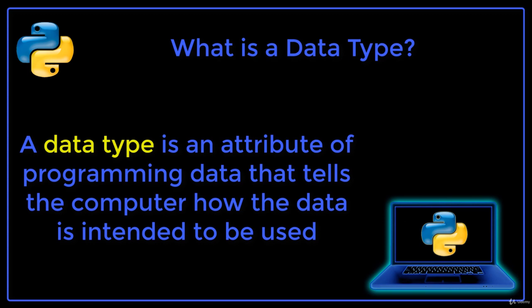For example, a number is a different type than text in computer programming. As a programmer, you want to be aware of the different data types supported in the language you are working in, as that is going to allow you to choose the best tools for whatever program you are writing.